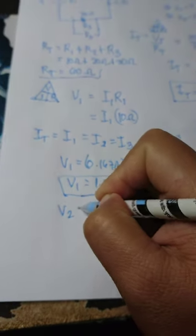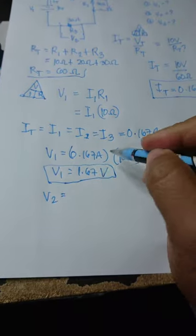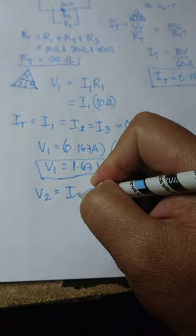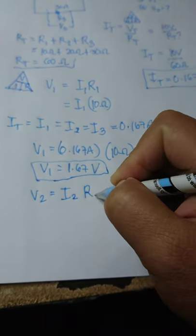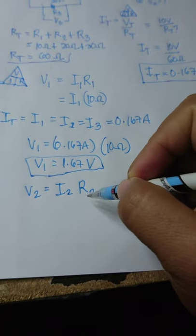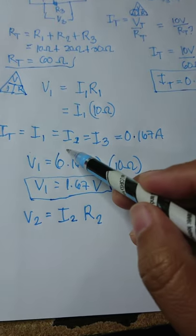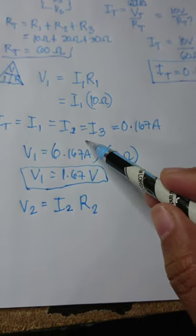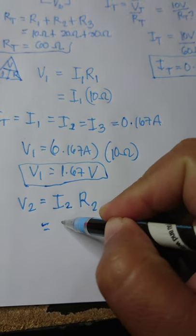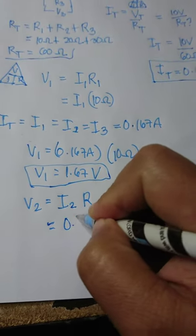Next, we look for V2. Same formula with V1. We use the subscript I2 and R2. Then following the rule for current in series, therefore I2 is also equal to the total current,